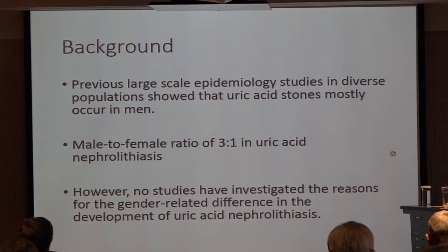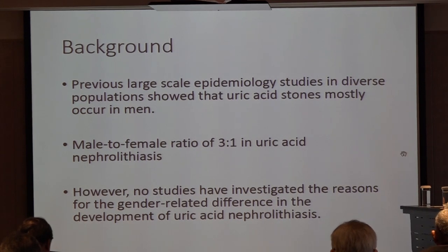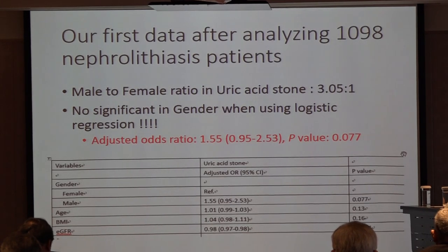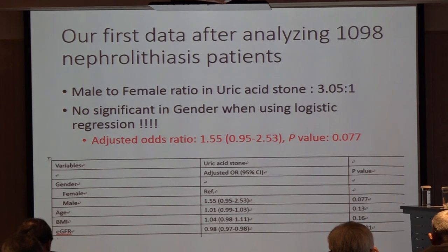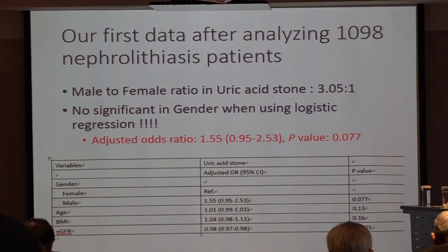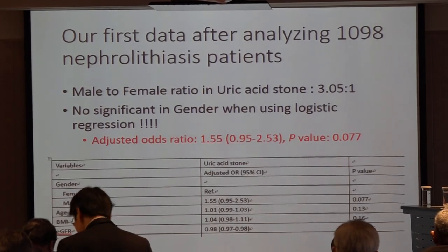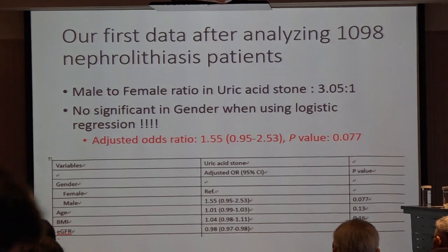As we know, previous papers show the male-to-female ratio is three to one in uric stone formation. However, no study has investigated the reason for the gender-related difference in uric stone development. When we analyzed our large stone bank data in southern Taiwan, the male-to-female ratio in uric stone was about three to one. But when using logistic regression to analyze risk factors, we found there was no significant effect of gender on uric stone formation.